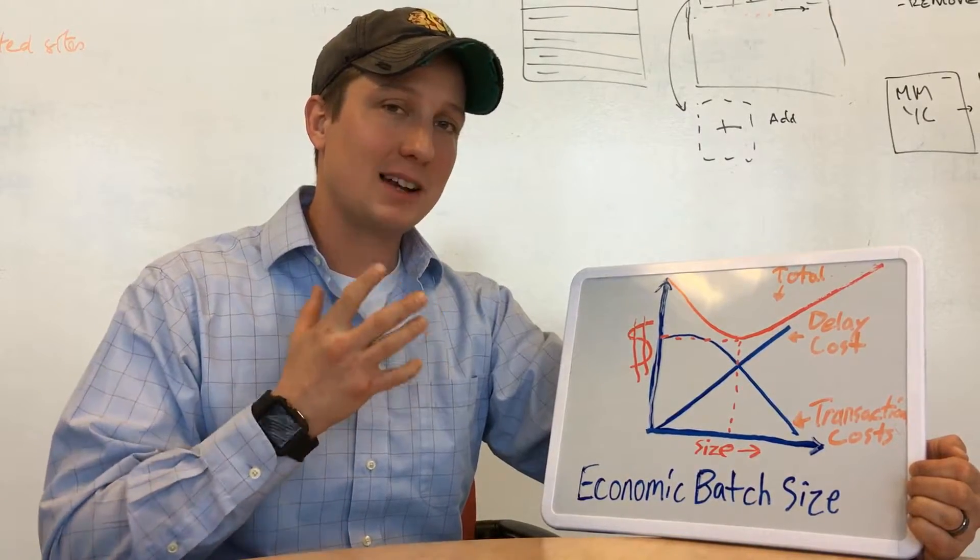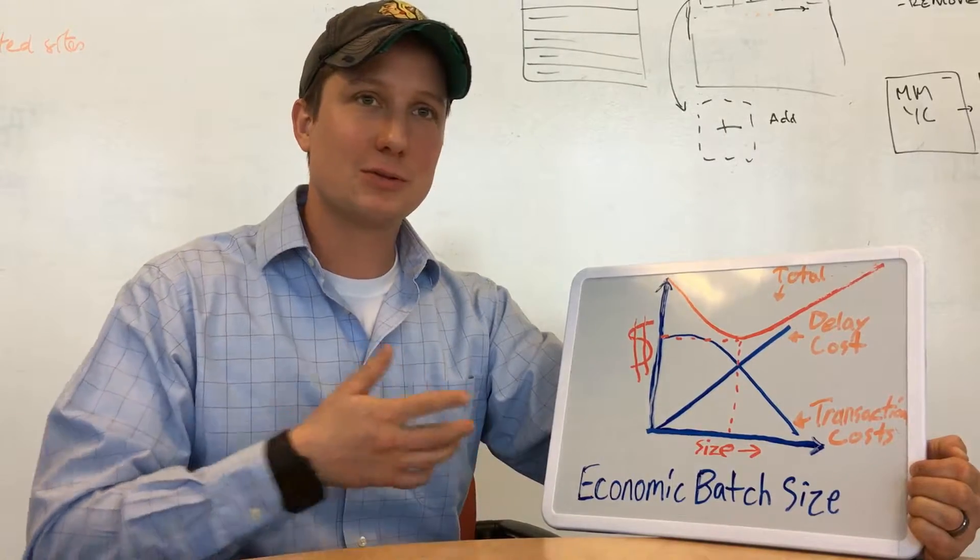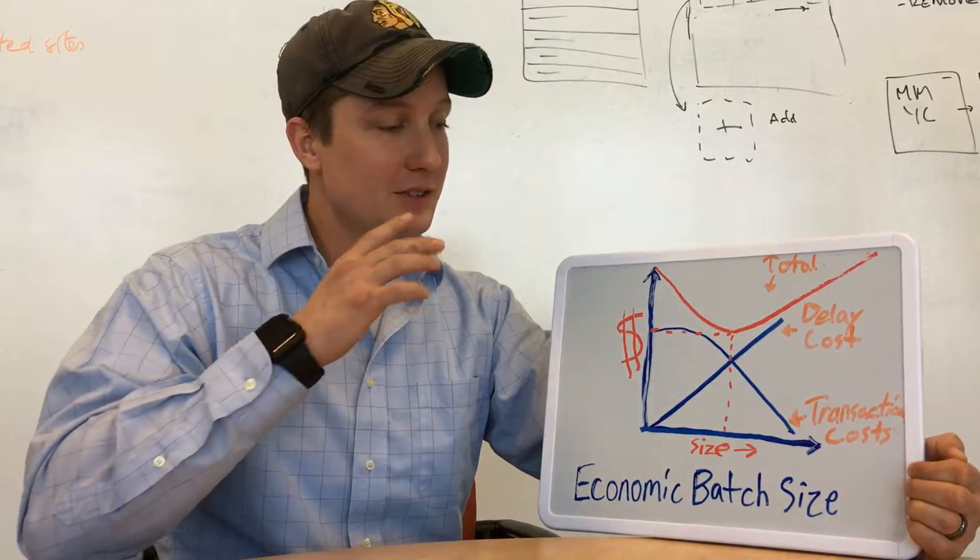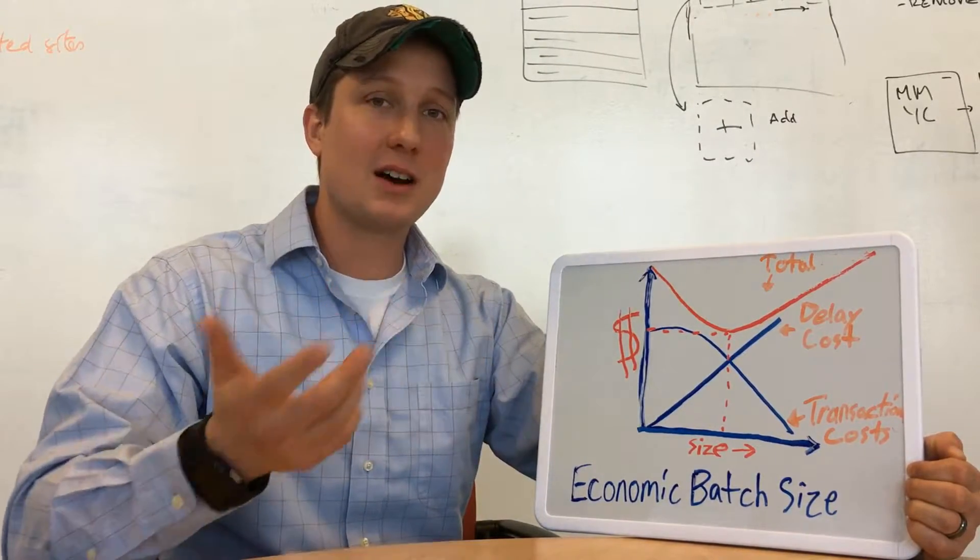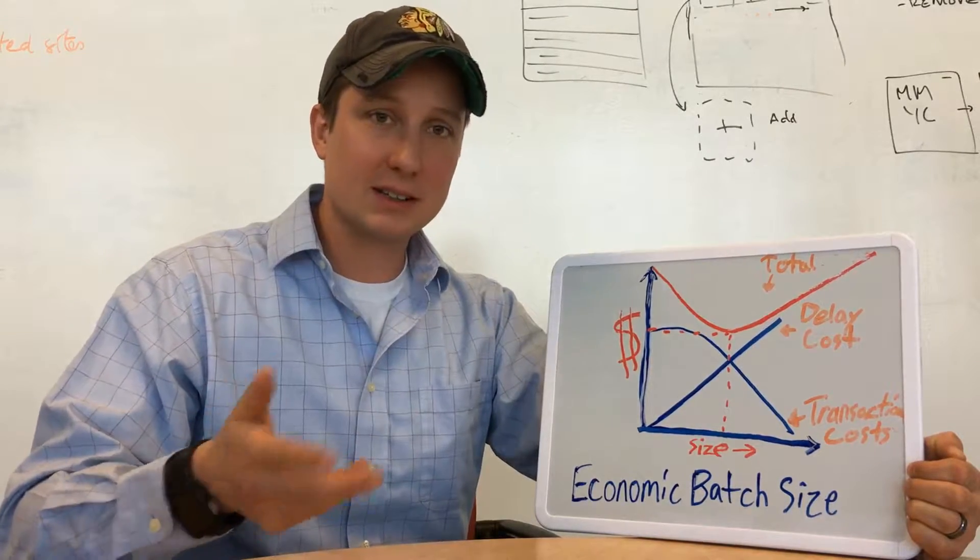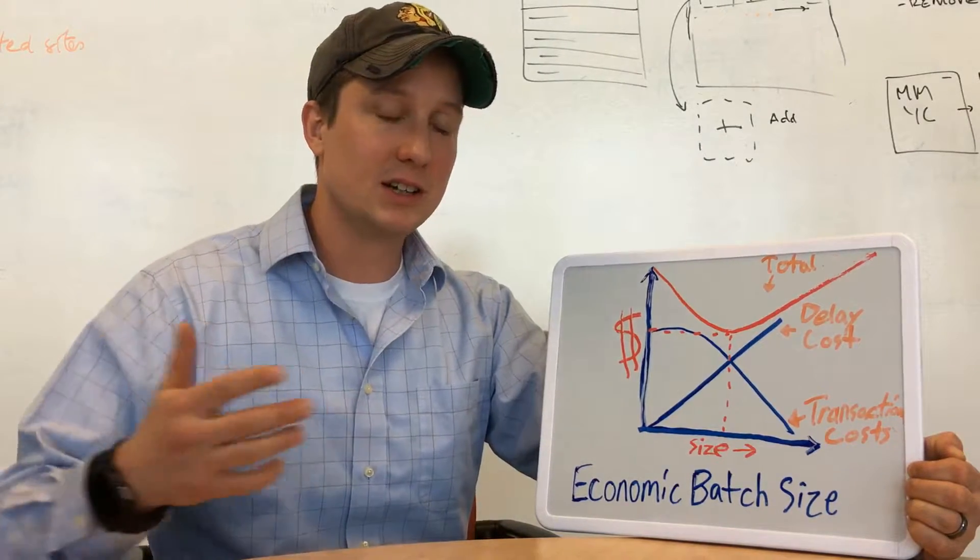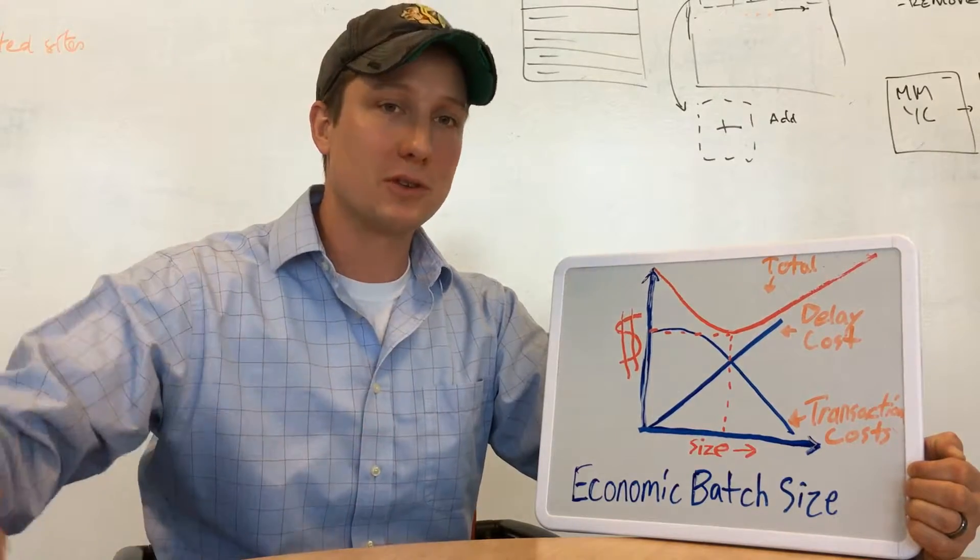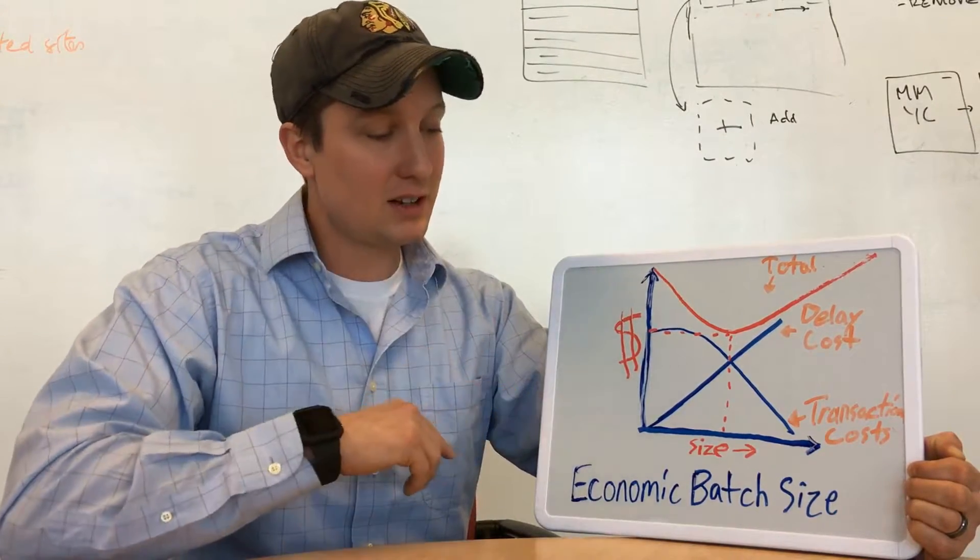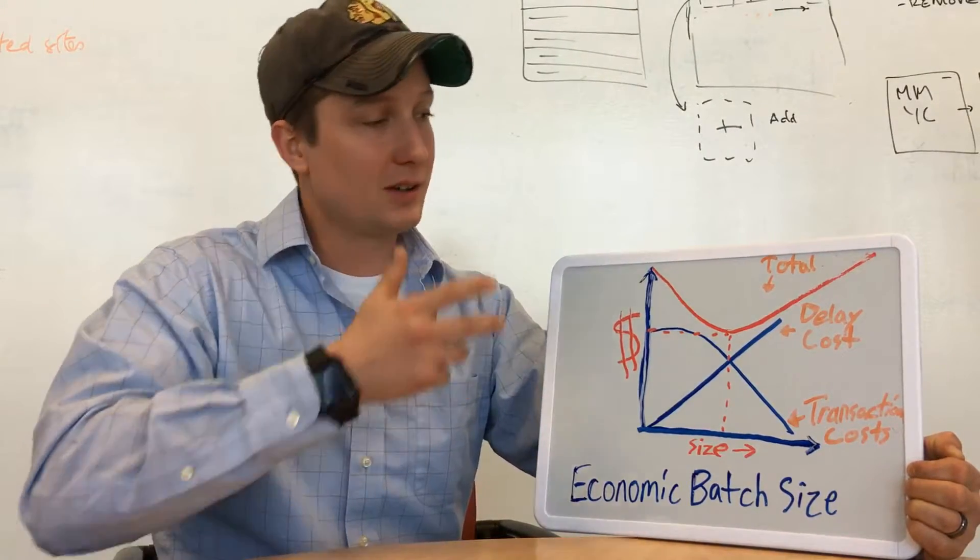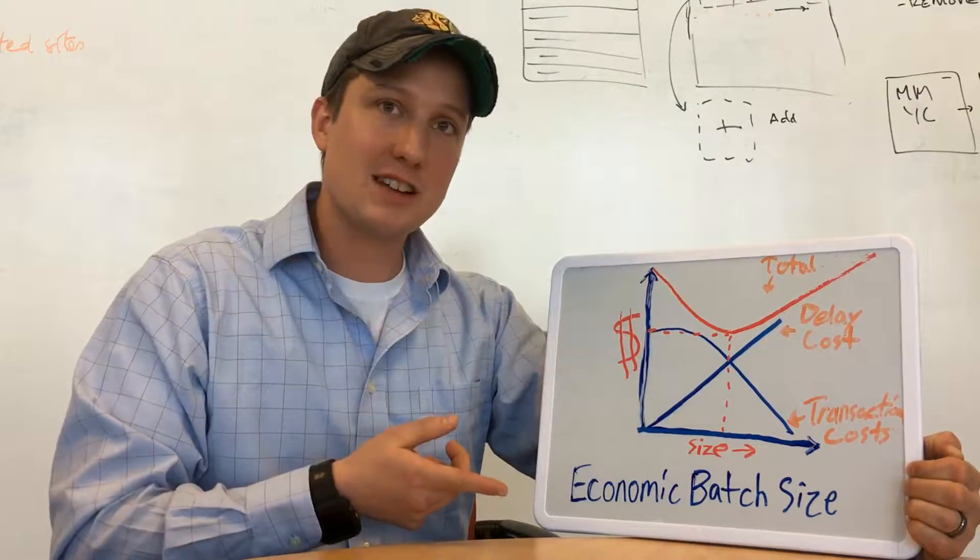Using batch size to optimize economic outcome is crucial because there's a trade-off between the cost to your company the more you delay the time to market, versus the cost it takes to get things released more frequently. In the economic batch size equation, we call these delay costs and transaction costs.